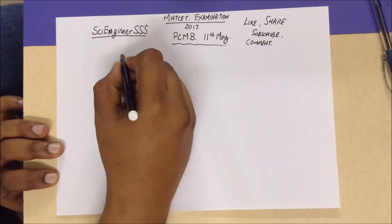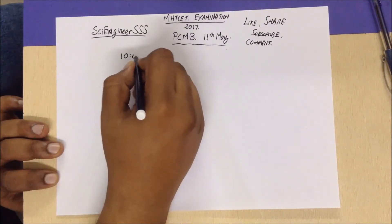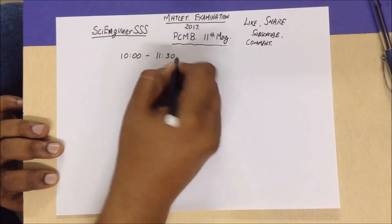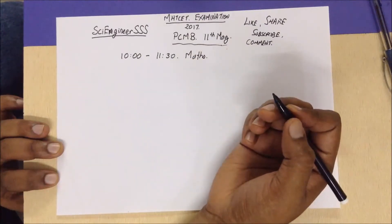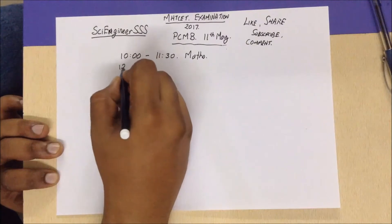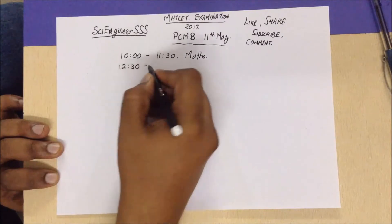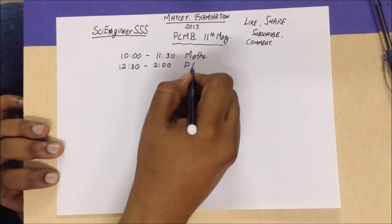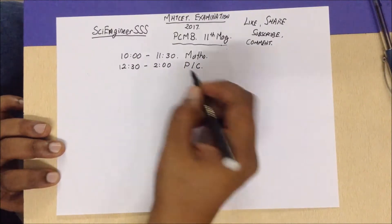The timing for the exam is: the mathematics paper will be starting at 10 AM sharp and ending at 11:30. Then after a break, Physics and Chemistry will be starting at 12:30 and ending at 2. After that the biology paper will be held.